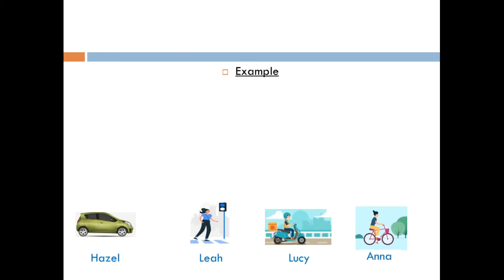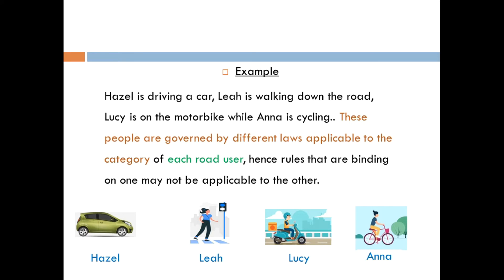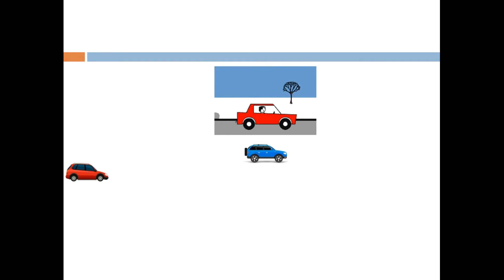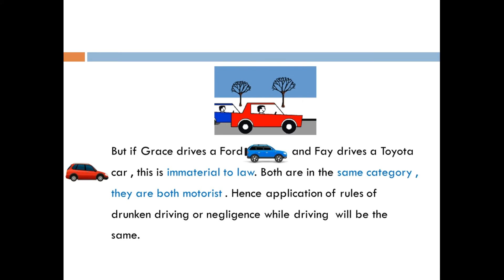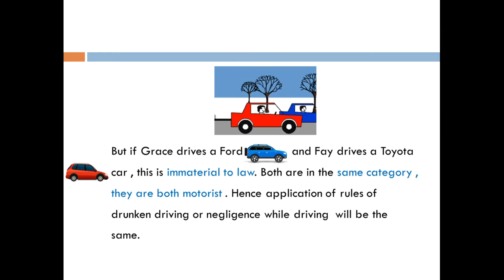Here is an example of equality in law: Yeso is driving a car, Lia is walking down the road, Lucy is on the motorbike, while Anna is cycling. These people are governed by different laws applicable to the different categories of each road user, so rules binding on one may not be applicable to the other. But if Grace drives a Ford and Faye drives a Toyota, this is immaterial to law — both are in the same category as motorists, so the application of rules on drunk driving or negligence while driving will be the same.